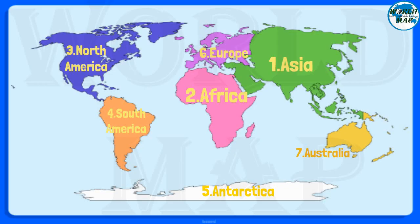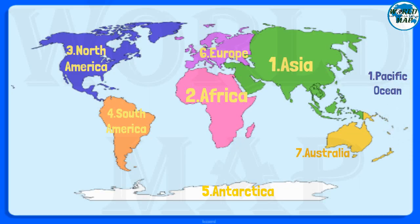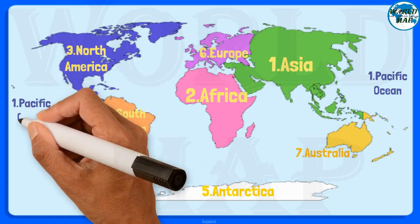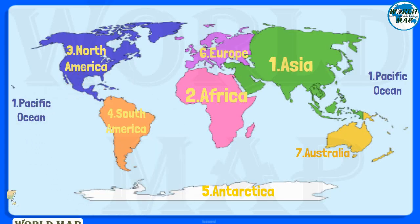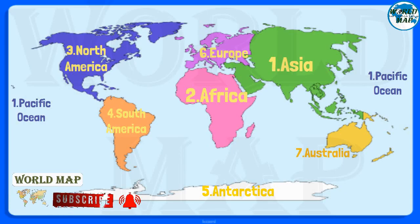What are the five oceans of the world? Number 1: Pacific Ocean. The Pacific Ocean is the largest ocean, covering more than 30% of the Earth. This is close to half of the water on Earth.